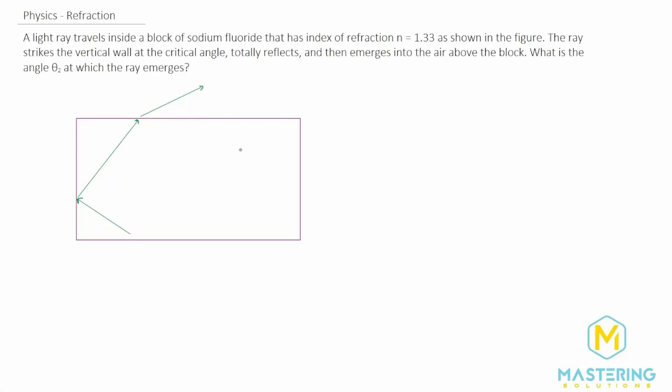Welcome to Mastering Solutions. In this question, we're dealing with refraction and critical angles or total internal reflection. We're told that this block here has an N of 1.33, the sodium fluoride. It's surrounded by air, of course, so we'll put N of 1 there.